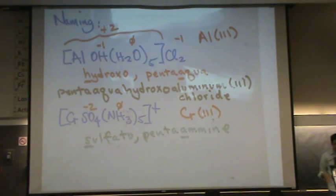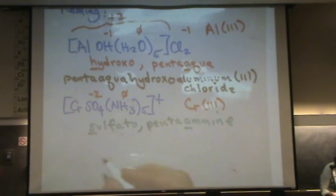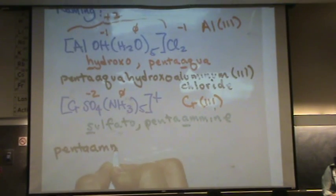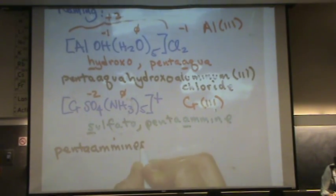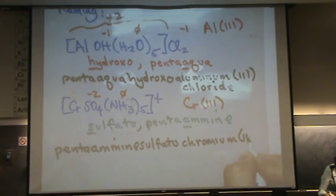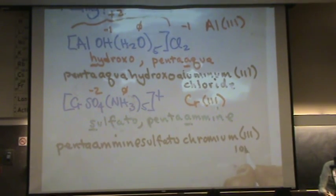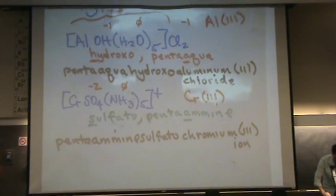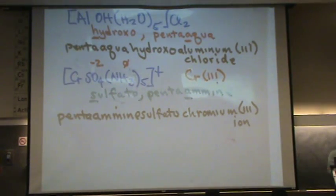It's a cation, so we're going to name it in English for the middle name. And this would be penta amine sulfato chromium three. And what's the last name? Ion. Yeah. If it's charged, its last name will always be Ion. So whenever you have a charged species, last name is always Ion. Any questions?